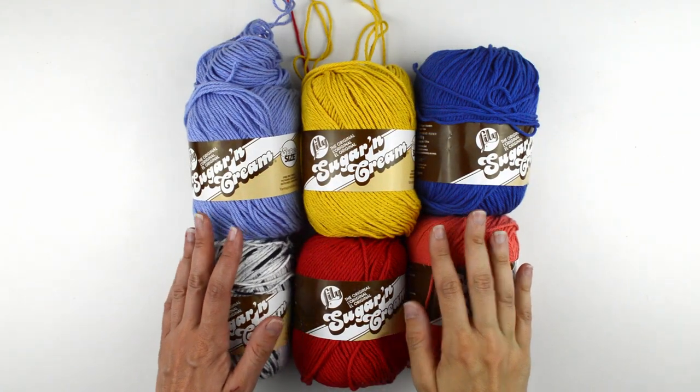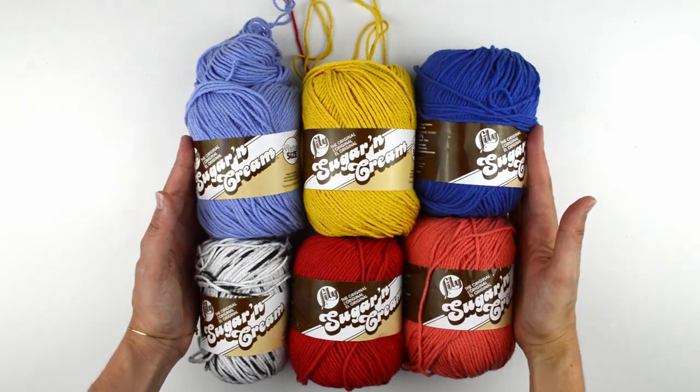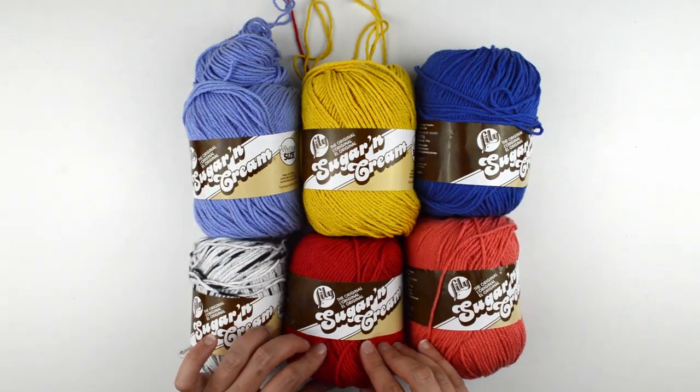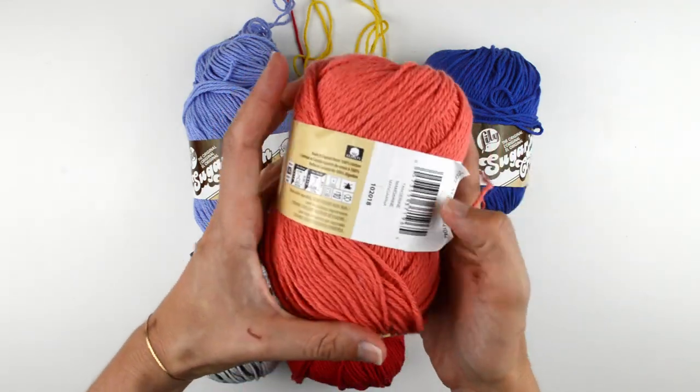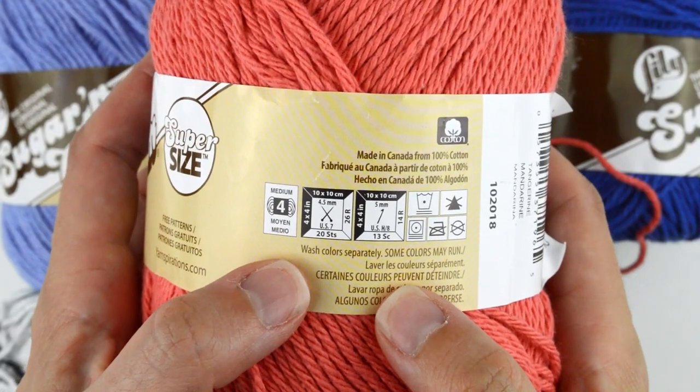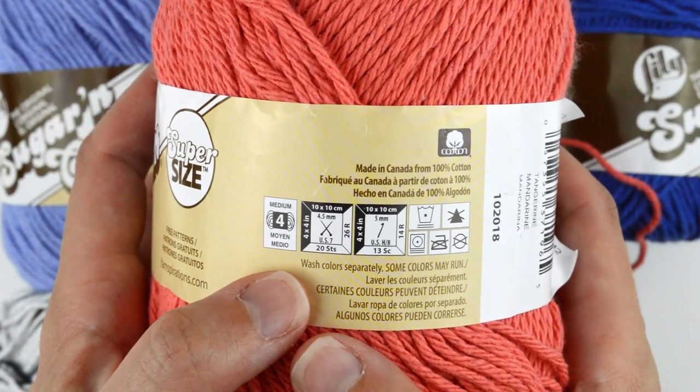To make an I-cord, you'll need the following supplies. You'll need some yarn. You can use any size you'd like. I used an assortment of these medium weight cotton yarns to make my drawstring. I'll put links to the colors along with additional information in the description.